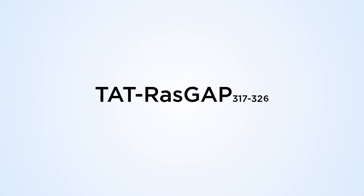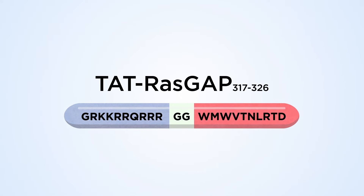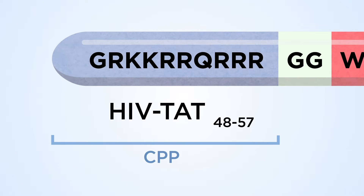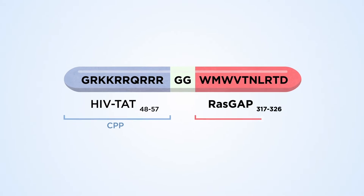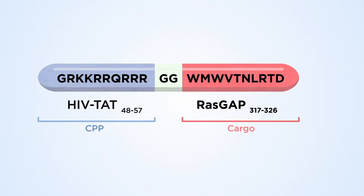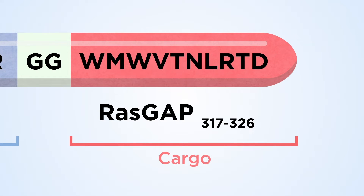TAT-RAS-GAP is an anti-cancer and anti-microbial compound comprising two parts. One part corresponds to the TAT cell-penetrating peptide. The second corresponds to the 317-326 sequence of P120-RAS-GAP. The tryptophan residues in the RAS-GAP moiety are crucial for TAT-RAS-GAP's function.